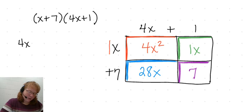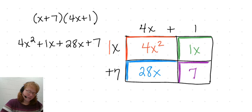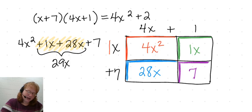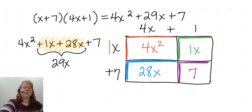So I have 4x squared plus 1x plus 28x plus 7. Looking at the like terms, we have a 1x and a 28x. We can add these two together: 1x and 28x is 29x. So our final answer — x plus 7 times 4x plus 1 — is 4x squared plus 29x plus 7.